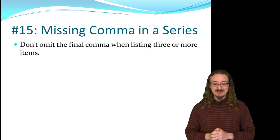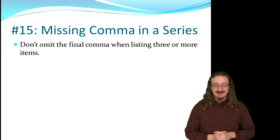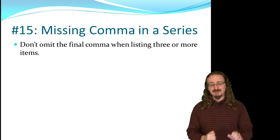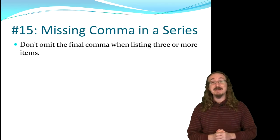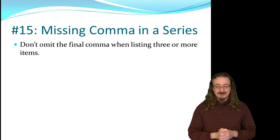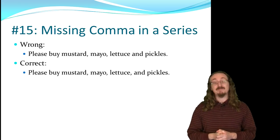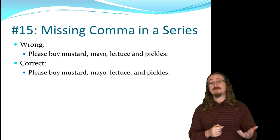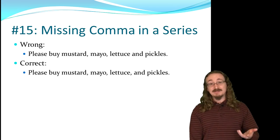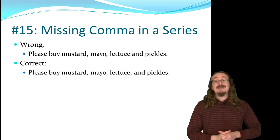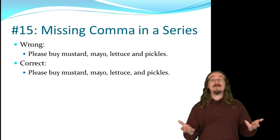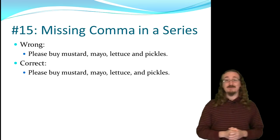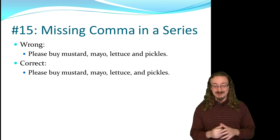Number 15: the missing comma in a series. If you have a list of items and you hit the third item, go ahead and put the comma there. This is sometimes called the serial comma or the Oxford comma. It's wrong to say 'please buy mustard, mayo, lettuce and pickles' — it should be 'please buy mustard, mayo, lettuce, and pickles.' Some teachers disagree, but the standard rule is to include that comma. It doesn't cost anything extra, so just do it.